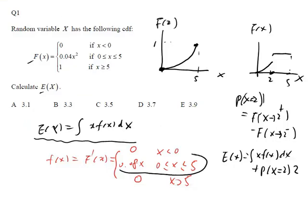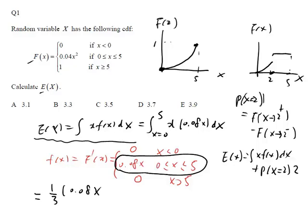So you just need to focus on this one. It becomes integral x from 0 to 5, x times 0.08x dx. And this is just a very simple integral. It becomes one-third of 0.08x cubed, from 0 to 5, and basically one-third of 0.08 times 5 cubed, equal 3.33. So the answer is B.